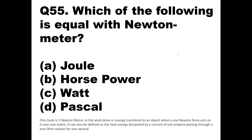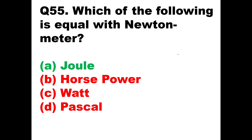Question 55: Which of the following is equal to newton meter? One newton meter is the work done when one newton force acts over one meter. It can also be defined as heat energy dissipated by a current of one ampere through a one ohm resistor for one second. One newton meter equals one joule, so option A — joule — is the answer.